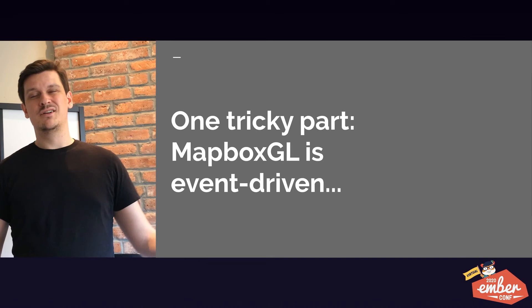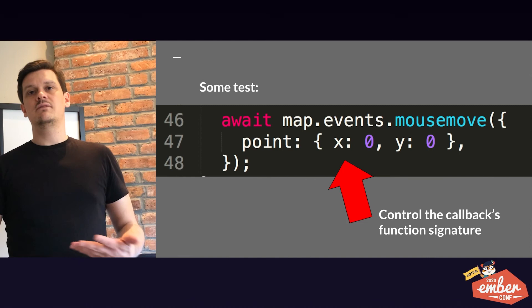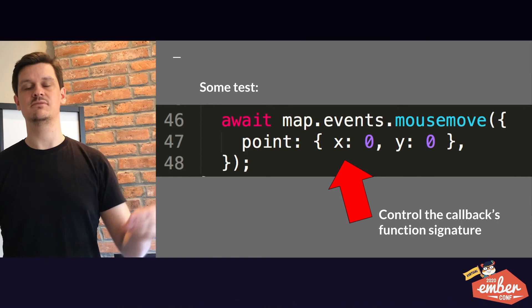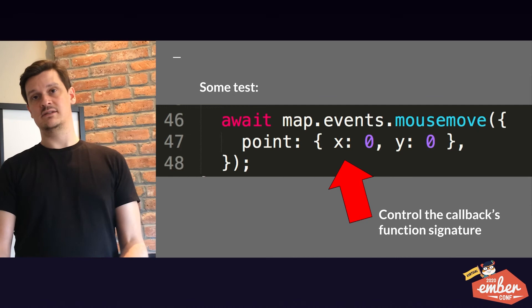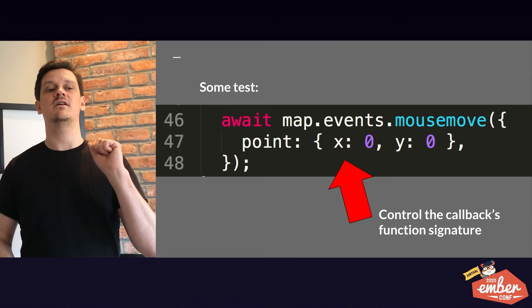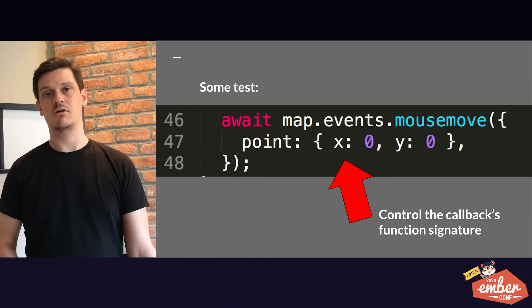Another tricky part is that Mapbox GL is event-driven. How do you simulate a mouse move event? Mapbox GL detects a map mouse move and then triggers the callback for your app's handling. Something that has worked for us is to — within your test — manually trigger that behavior and give the callback signature needed for your own app's callback function. This way you're actually triggering the behavior in your app and testing it.